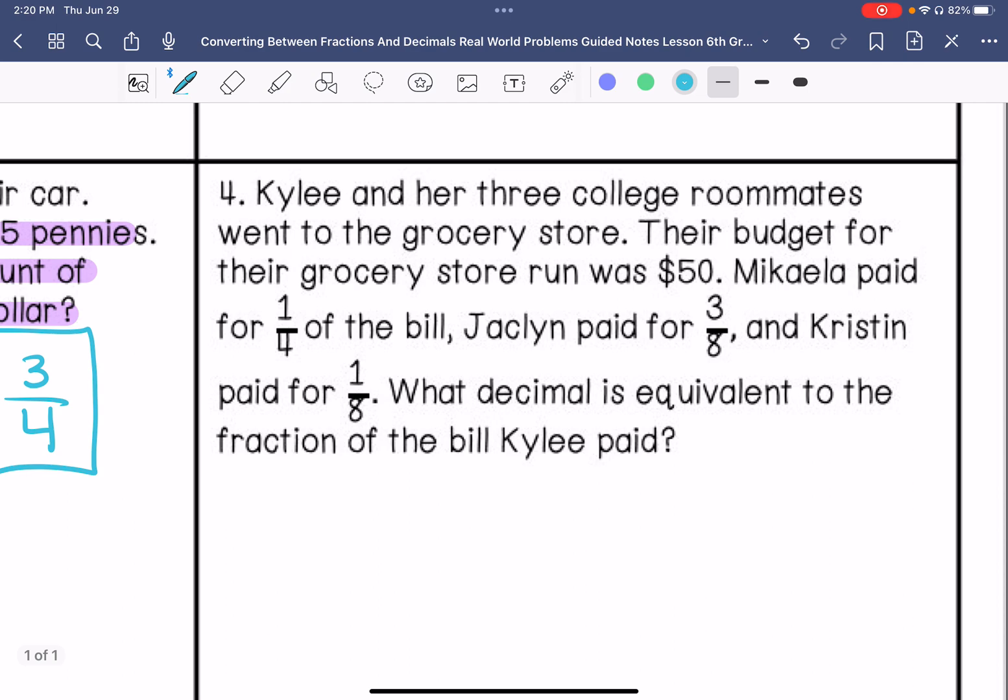Number four, Kylie and her three college roommates went to the grocery store, so that's four of them. Their budget for their grocery store run was fifty dollars. Michaela paid one-fourth of the bill, Jacqueline paid three-eighths of the bill, and Kristen paid one-eighth of the bill. What decimal is equivalent to the fraction of the bill Kylie paid?